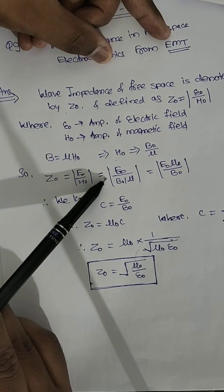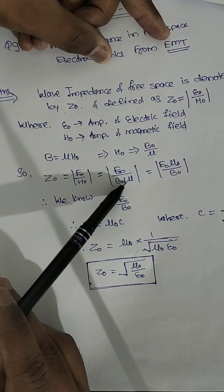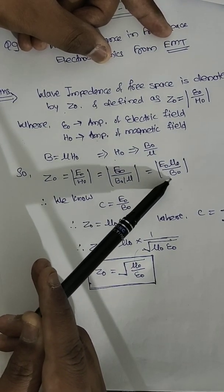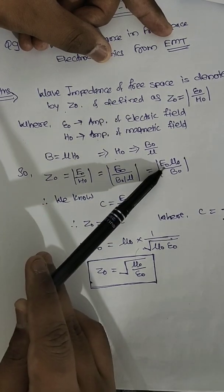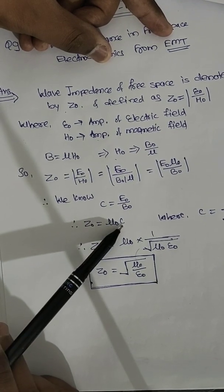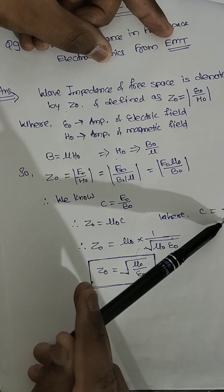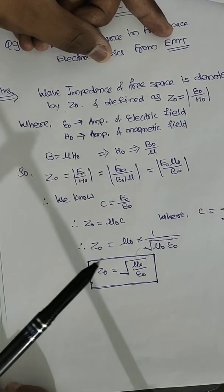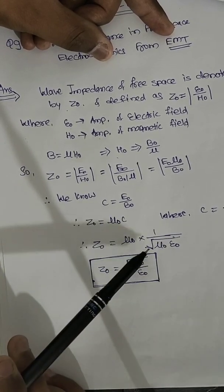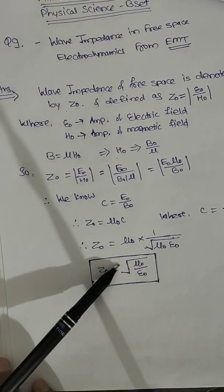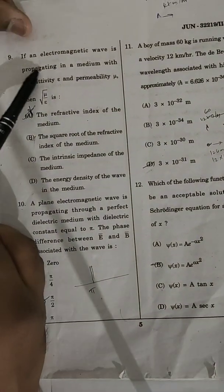Since B0 = mu0 times H0, we get Z0 = E0 upon (B0/mu0). The velocity of light c = E0 upon B0, so Z0 = mu0 times c. Since c = 1 upon root(mu0 times E0), substituting gives Z0 = mu0 times (1 upon root(mu0/E0)), which simplifies to Z0 = root(mu0 upon E0).